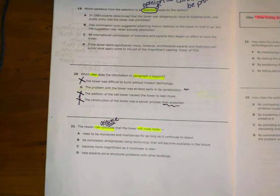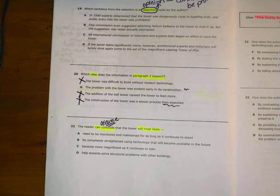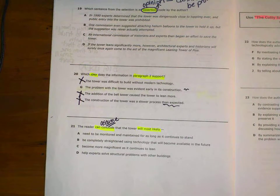And we did number 20. And now number 21. The reader can conclude that the tower will most likely, A, need to be monitored and maintained for as long as it continues to stand. Can I assume that? Is that something that the passage would support? B, be completely straightened using technology. Is that an option that I can make from the passage? C, become more magnificent as it continues to lean? Is that an assumption that I can make from this passage? Or D, help experts solve structural problems with other buildings? Is that a conclusion that I can make from this passage? Choose your answer.